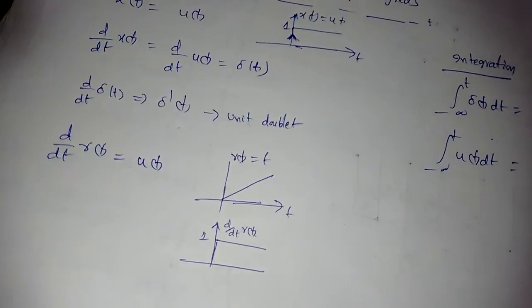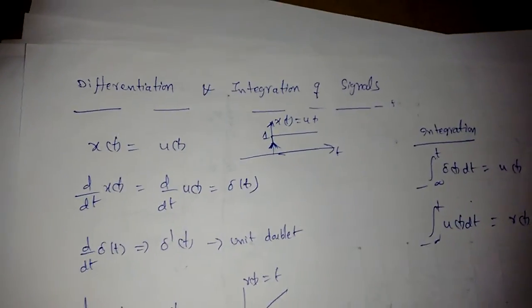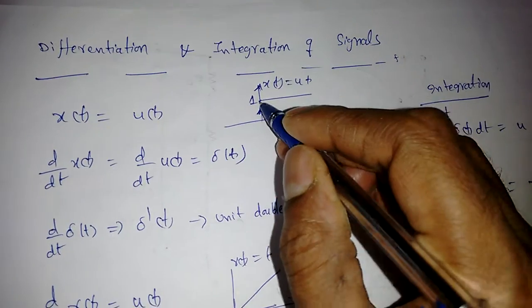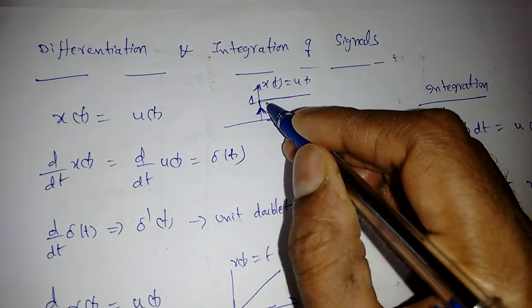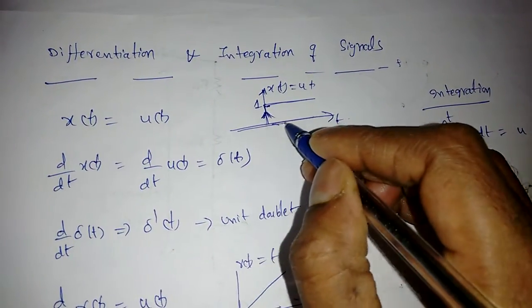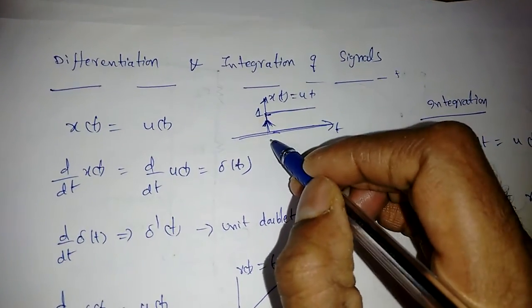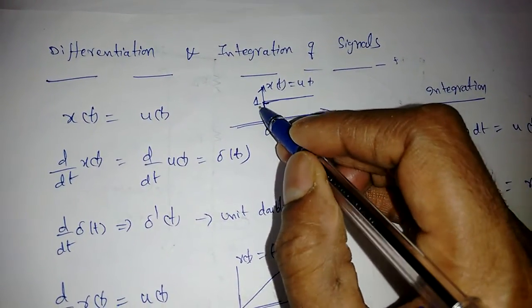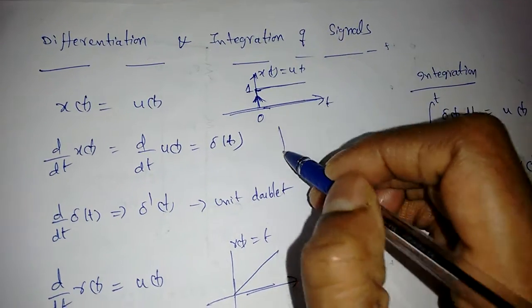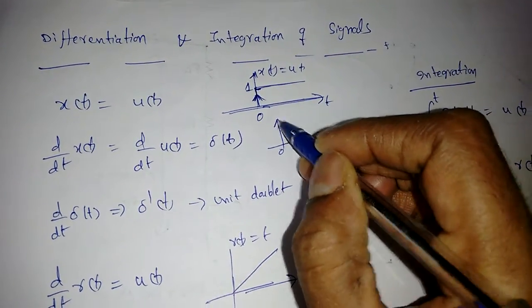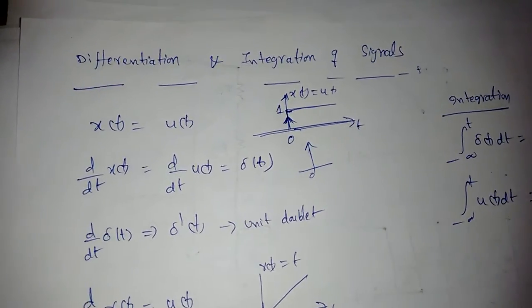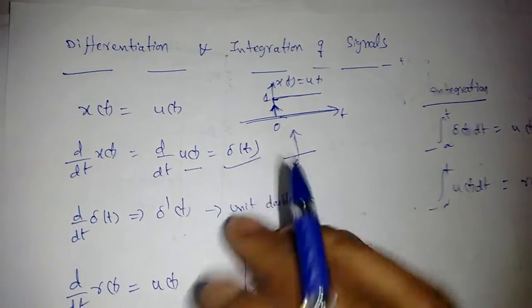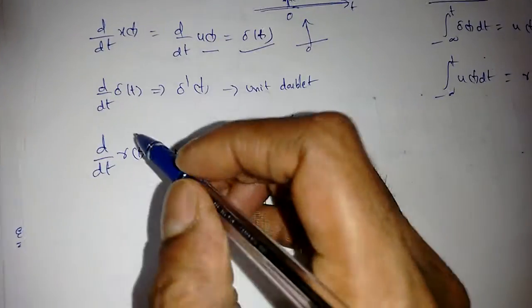Next, we look at differentiation and integration of signals. If x(t) is the unit step signal u(t), whenever we differentiate a discontinuous signal, wherever the discontinuity occurs we get an impulse. The amplitude here is 1, so at t equal to 0 we get an impulse. That is why differentiating the unit step signal gives the impulse signal.